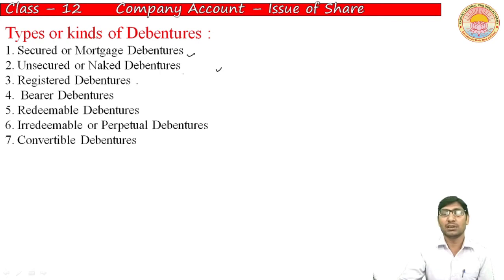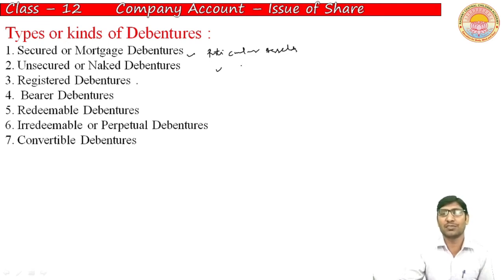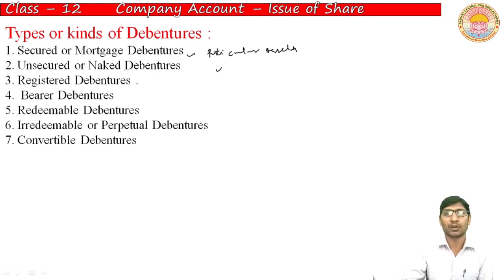The security must be given by the company in the form of business property. This security is classified into two categories: when a particular asset is used as security, it is called a fixed charge — in such a case the company cannot deal with that particular asset. But when assets in general are used as security (floating charge), the company has the freedom to utilize those assets freely without restrictions. However, if a particular asset is specifically secured, it cannot be utilized further.